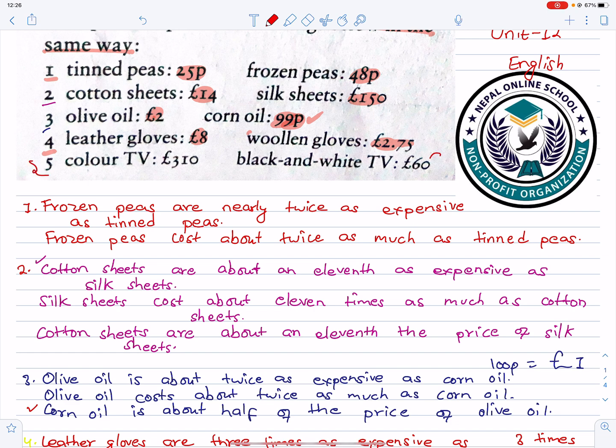This is the fifth one. I will discuss it. The color TV is 310 pounds and the black and white TV is 60 pounds.